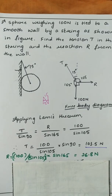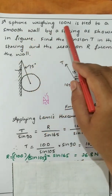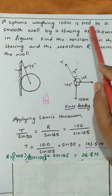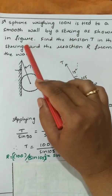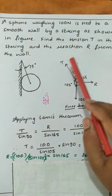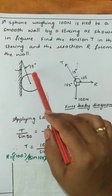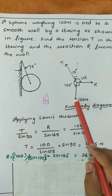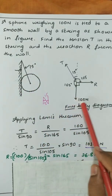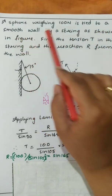Let us solve a problem using Lamy's theorem. A sphere weighing 100 N is tied to a smooth wall by a string as shown in the figure. This is the sphere weighing 100 N — this is the self weight I have represented, 100 N — and tied to a smooth wall.